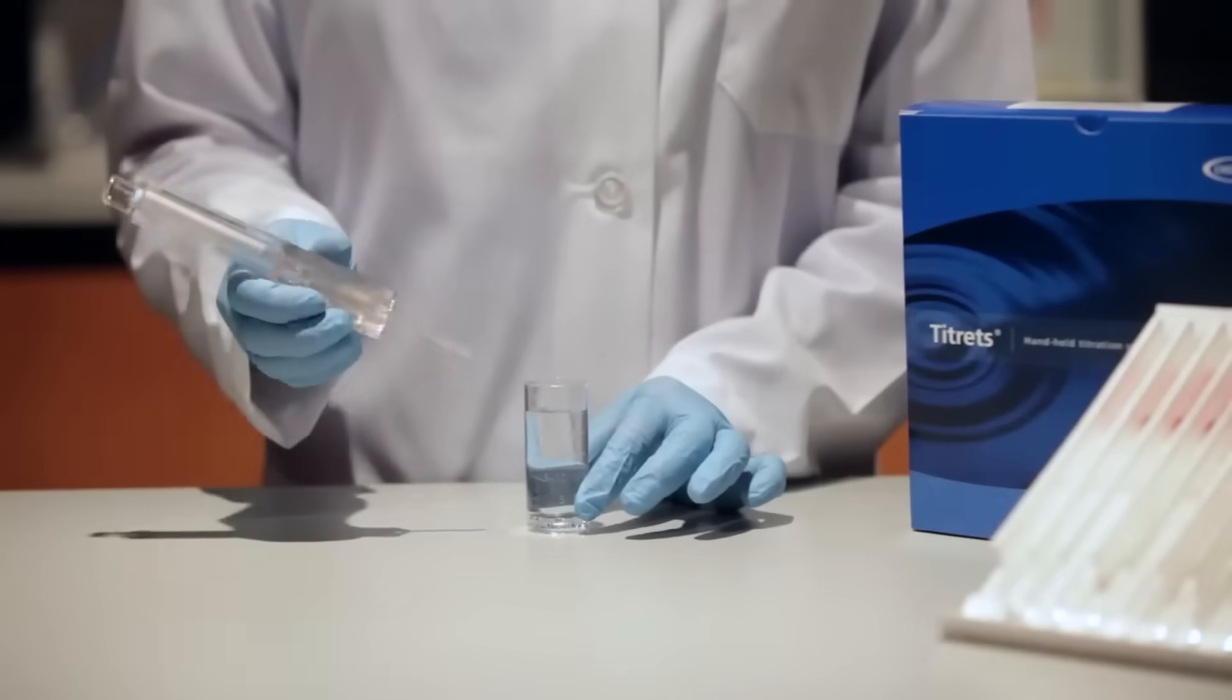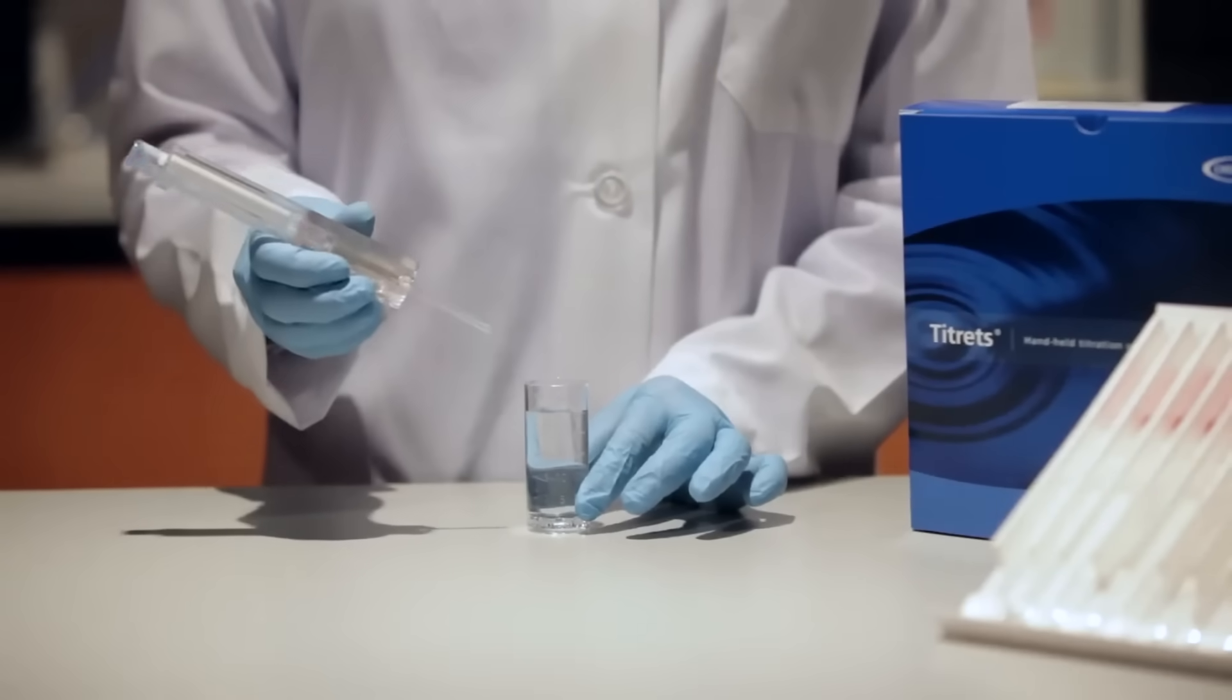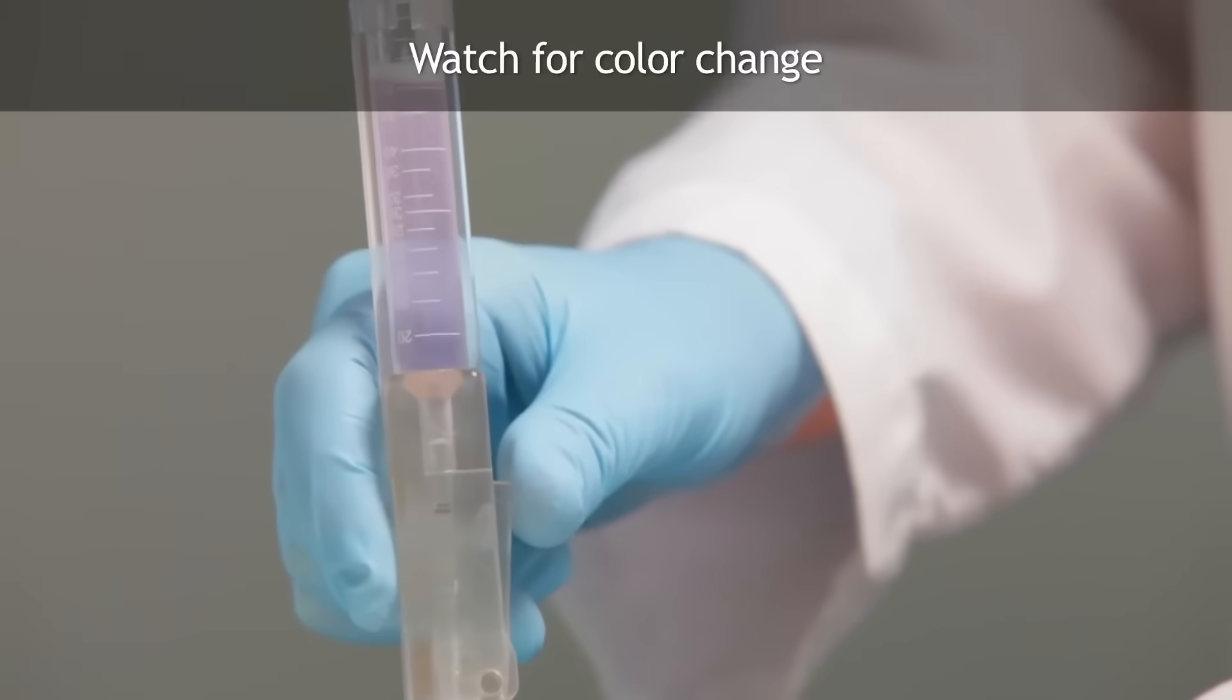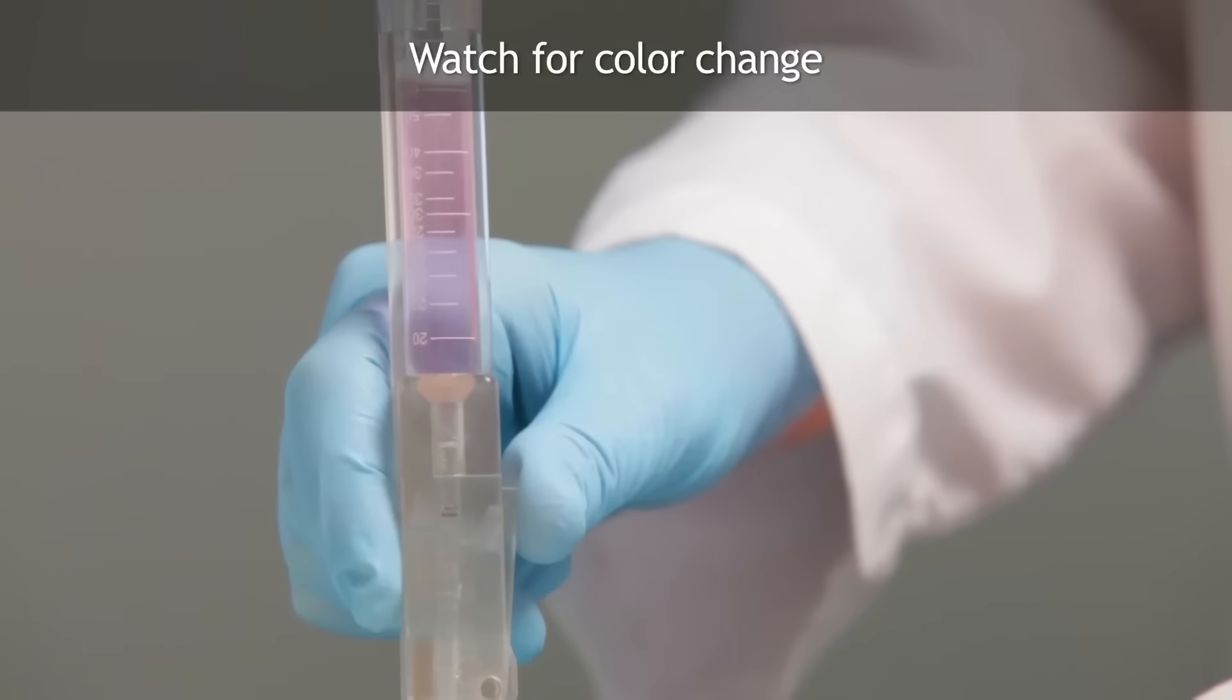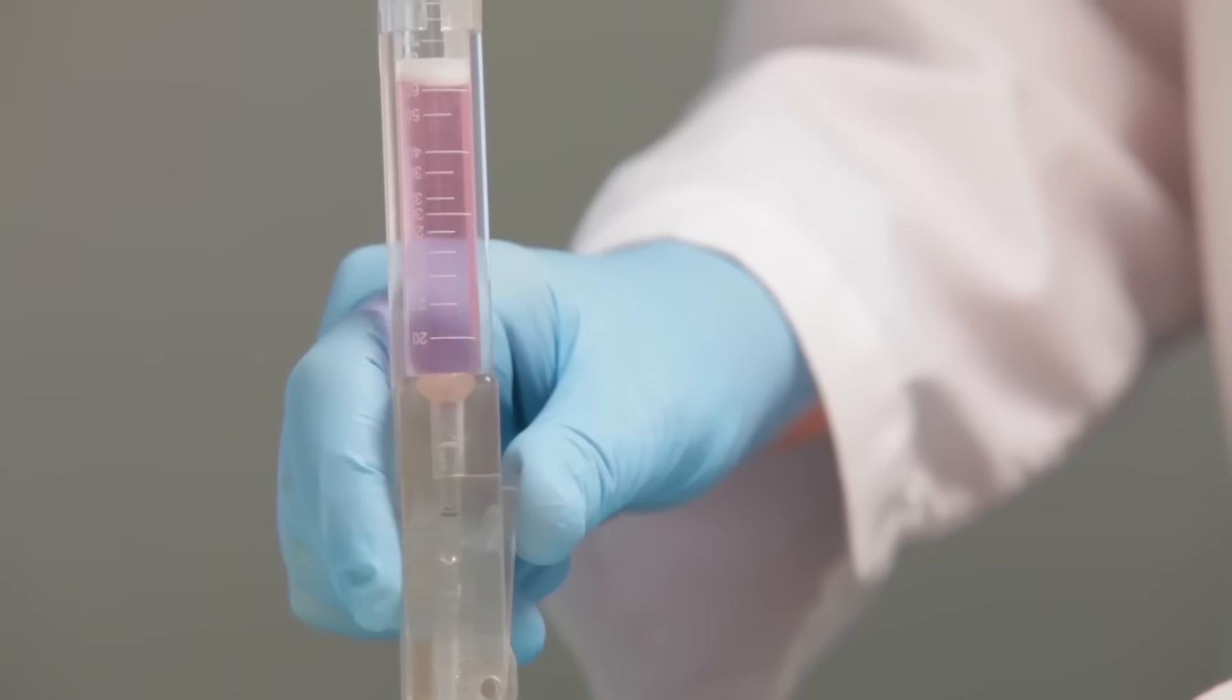After each addition, rock the entire assembly to mix the contents of the ampoule. Watch for a color change from blue to pink. When the color of the liquid in the ampoule changes to pink, remove the ampoule from the titretter.